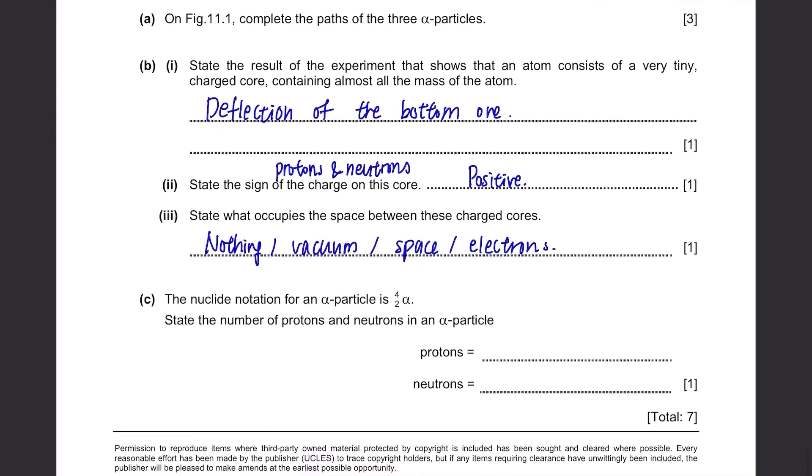Part C. The nuclei notation for an alpha particle is 4,2 alpha. State the number of protons and neutrons in an alpha particle. We write the proton number at the bottom, so it's 2. The number on top stands for the nucleon number, which is the sum of protons and neutrons. So to find the number of neutrons, minus the proton number from the nucleon number, which is 4 minus 2, and the answer is 2.